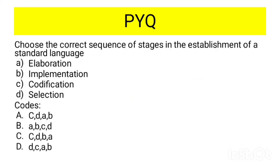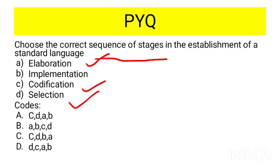The next question asks to choose the correct sequence of stages in the establishment of a standard language. We first select the language, then codify it, then elaboration comes into focus, then we implement the language. So the correct sequence is D, C, A, B — hence option D is the correct answer.